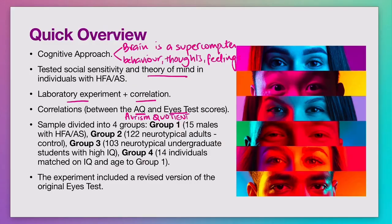This experiment used a revised version of the original Eyes Test and all of these participants took this revised version. The results of the Eyes Test plus the results of the Autism Quotient were used to establish a correlation. Do keep in mind, though, that group two did not take the Autism Quotient Test, and you'll learn why this was the case as we move through our lessons.